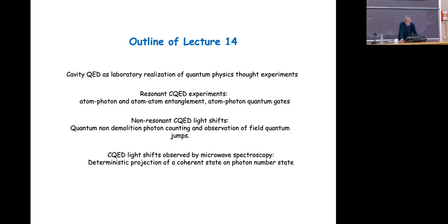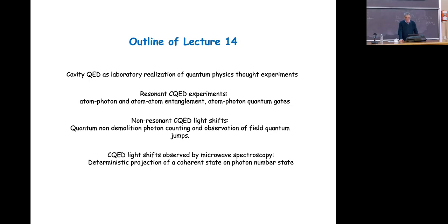In the last part I will talk about how you can observe cavity QED light shifts by microwave spectroscopy of the atomic system, and I will show you that this amounts to performing a deterministic projection of a coherent state on a photon number state. The coherent state has an uncertainty in the photon number; when you perform these experiments you force the photon number to converge to a given value, which of course changes randomly from one shot of the experiment to the next. This also illustrates the postulates of quantum physics.